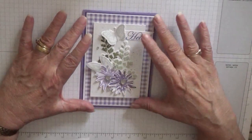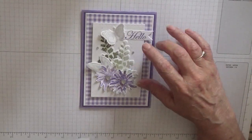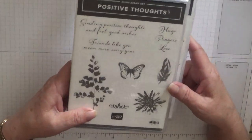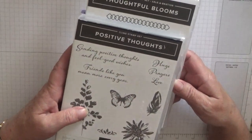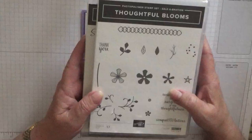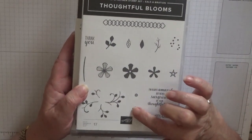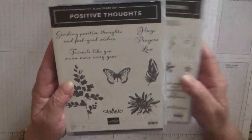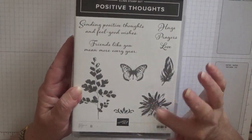Well the cardstock. First of all, I'm using Positive Thoughts and Thoughtful Bloom. All I'm using is this tiny flower here on Thoughtful Bloom, and I'm going to use this flower, the feather, the butterfly, and these leaves.